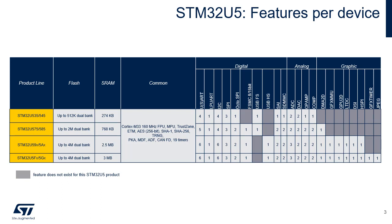The STM32U59X, 5AX, 5FX, and 5GX products offer a full-featured peripheral set including USB high-speed with integrated PHY, two 14-bit ADCs and one 12-bit ADC, graphic peripherals and enhanced memory sizes.